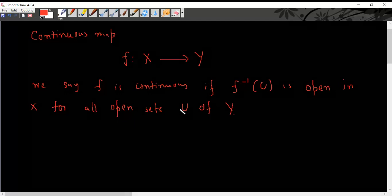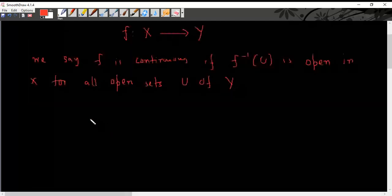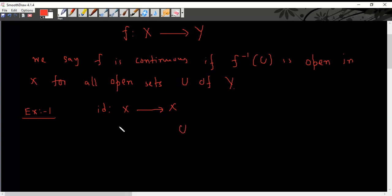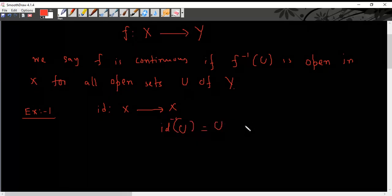Between topological space X to topological space Y. Let's see a few examples. Example number one: consider the identity function from topological space X to topological space X. Why is it a continuous function? Because if you take any open set U, the identity inverse of U is again U which is open in X, and that satisfies for all possible open sets U. So identity is a continuous map from X to X.